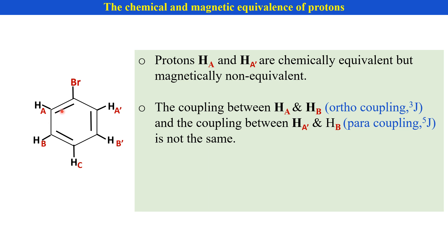That is long-range coupling. Ortho coupling and para coupling are not the same. Therefore, HA and HA' are chemically equivalent but magnetically non-equivalent.